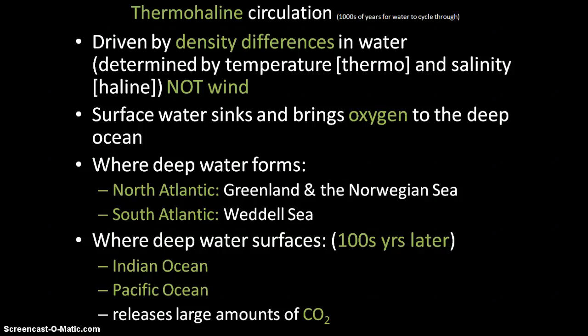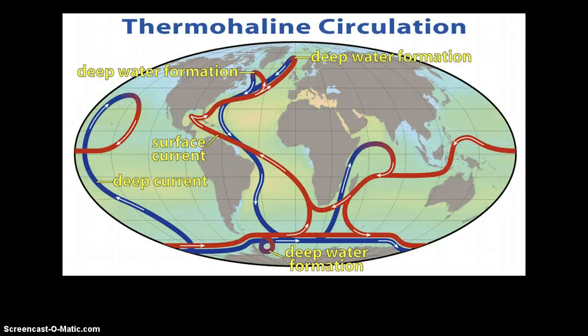When the surface water sinks, it brings oxygen to the deep. Sometimes water becomes colder and sinks partway, bringing oxygen to different levels of the ocean. You can see where deep water forms and where it surfaces in the Indian and Pacific Ocean; it releases a large amount of carbon dioxide when it comes back up. Here's a picture showing the current — the blue lines represent the deep cold water currents, and the red lines represent the warm surface water currents. This current goes through all of the oceans of the world and brings oxygen to the deep.